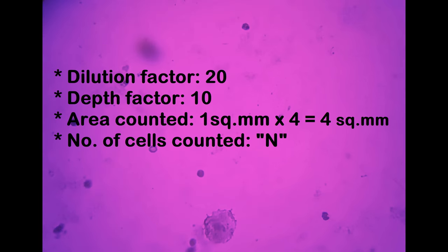We know that dilution is 1 is to 20, so dilution factor becomes 20. Depth or height of the blood film is 1 tenth of a millimeter. Therefore, depth factor is 10. Area counted is 1 square millimeter times 4 squares, which equals 4 square millimeters.